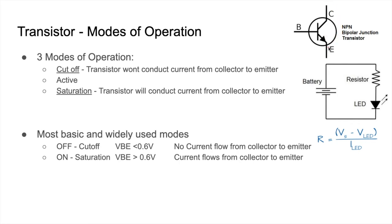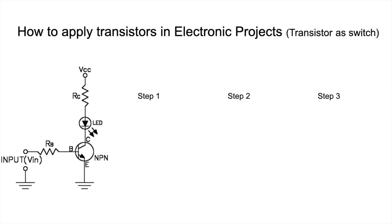If you give a voltage between the base and emitter that is more than 0.6 volts, then the transistor will be on and current will pass from collector to emitter. This is how a transistor works in a transistor-as-switch condition.